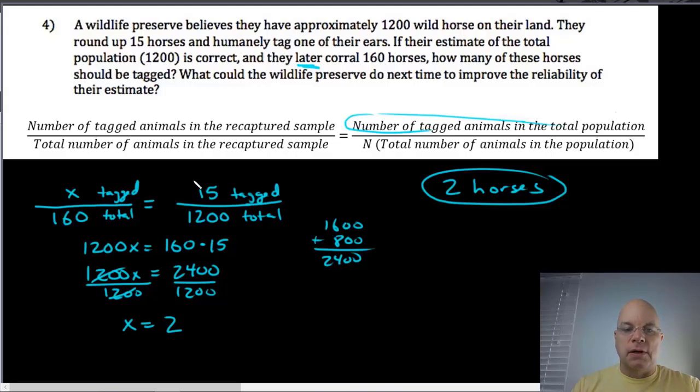Then you get a much more reasonable estimate when you recapture 160. You should expect some of those to be among the 40 tagged horses. Another thing you could do is you could tag 15, I still don't think that's a great idea, but if you're going to tag 15 and you're going to recapture 160, you better recapture 160, send it back out, recapture another 160, send it back out, do several trials. You either want to tag more animals in the first place or do several trials, or maybe both of those things to improve the reliability of the estimate.